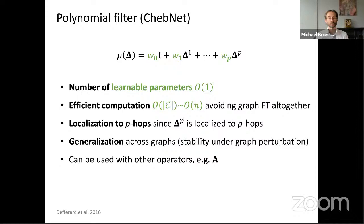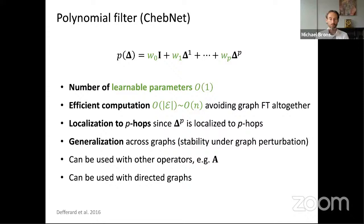You can also use other operators, such as the adjacency matrix, and it doesn't need to be symmetric — you can take a polynomial in any matrix and apply this construction to directed graphs. This was one of the first practical graph neural networks, ChebNet or Chebyshev Network, developed by Michael Defferrard, Xavier Bresson, and Pierre Vandergheynst, and it's a quite popular approach in this domain.